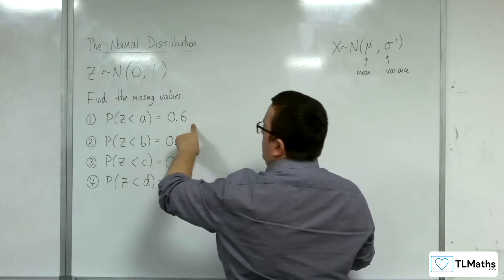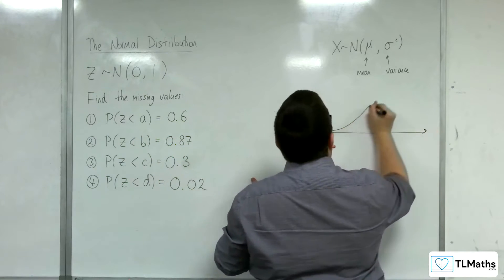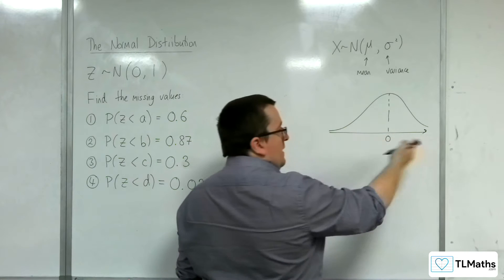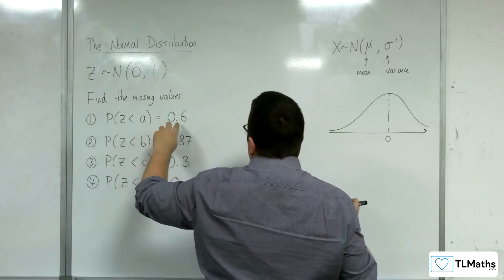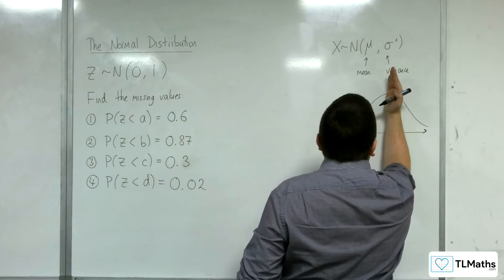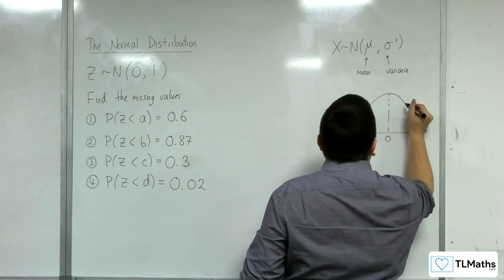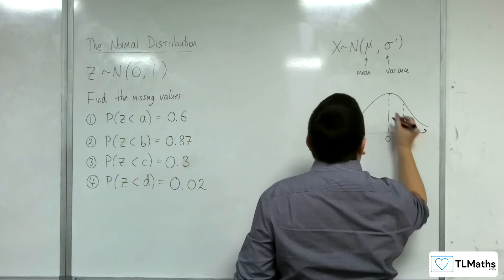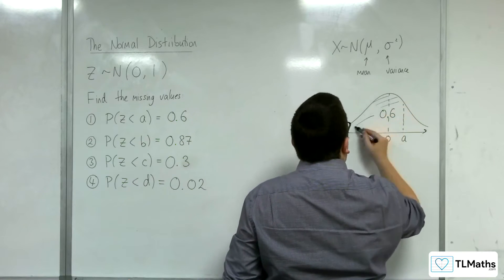Number one, we've got the probability of z being less than a is 0.6. So what does that mean? If we draw one of the standard normal distributions like so, what it's saying is that there is a value along here, a, so that the probability to the left of a is 0.6. If we were slap bang in the middle, the probability to the left is 0.5. So in order to be 0.6, it's got to be a little bit further along. So that's the value a that I want to find, and this region has an area of 0.6.